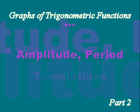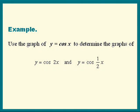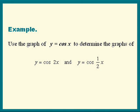The two examples we'll use are y equals cosine 2x and y equals cosine of 1 half times x.